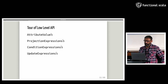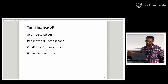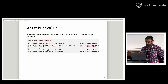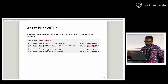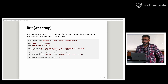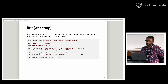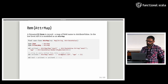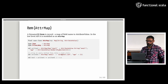We're going to look at some of the fundamental types in the low-level API, and these map one-to-one with DynamoDB concepts. In DynamoDB, an attribute value represents a field type and value pair — the API captures this in a sealed trait hierarchy. A DynamoDB item is a record, a map of field name to attribute value. In the low-level API, it's modeled as a natural map, which is a wrapper for a map of string to an attribute value. We provide item and primary key type aliases, along with a special apply method that cuts out construction boilerplate.